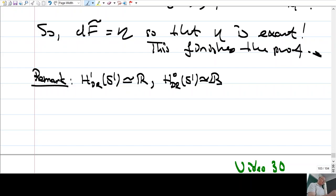Zero forms are just functions. Closed zero forms are just constant functions. And since dimension of S^1 is 1, there is no form of degree larger than 1 on S^1.